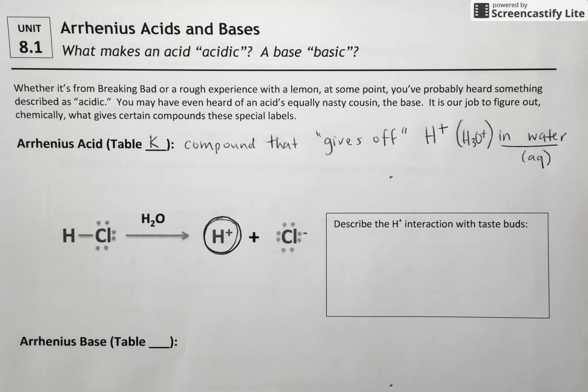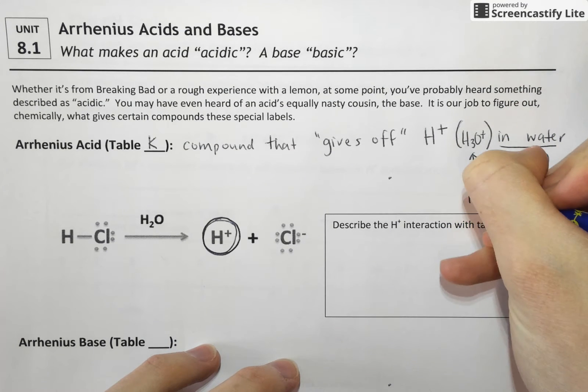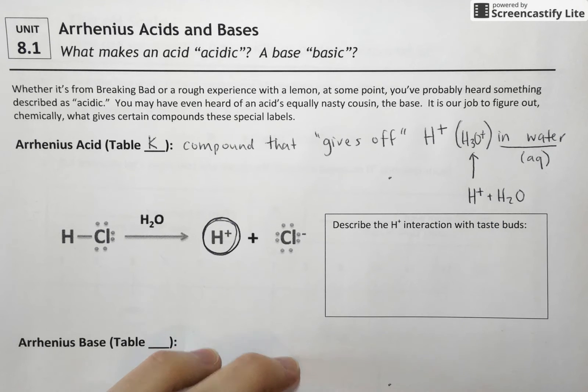I'm getting that name hydronium from table E that tells you the names of many polyatomic ions like H3O plus. And that arises just simply from the reaction of H plus with water to form H3O plus.